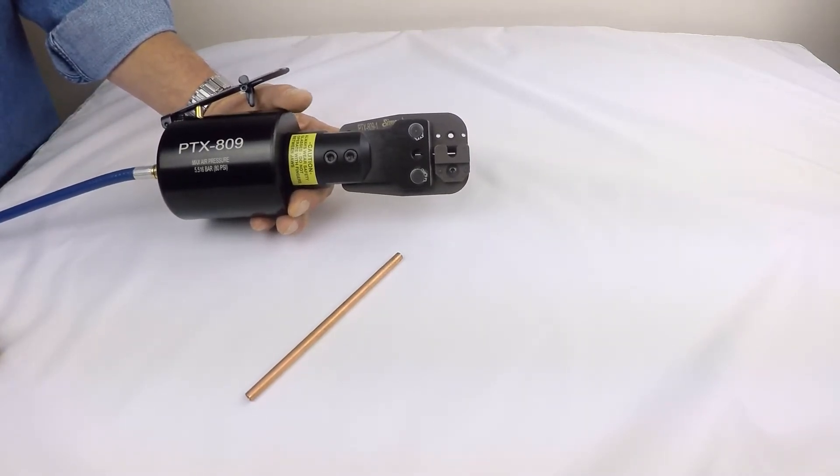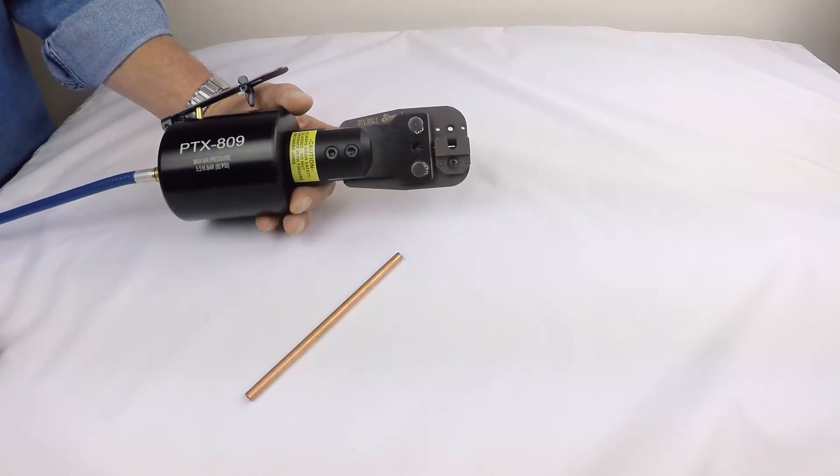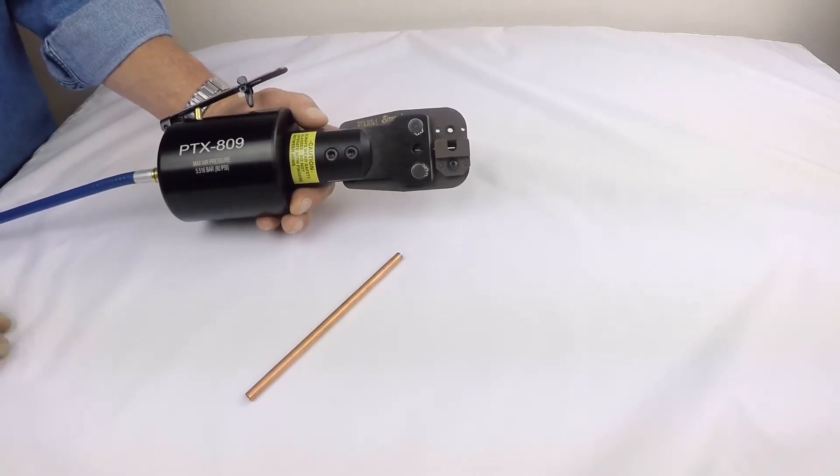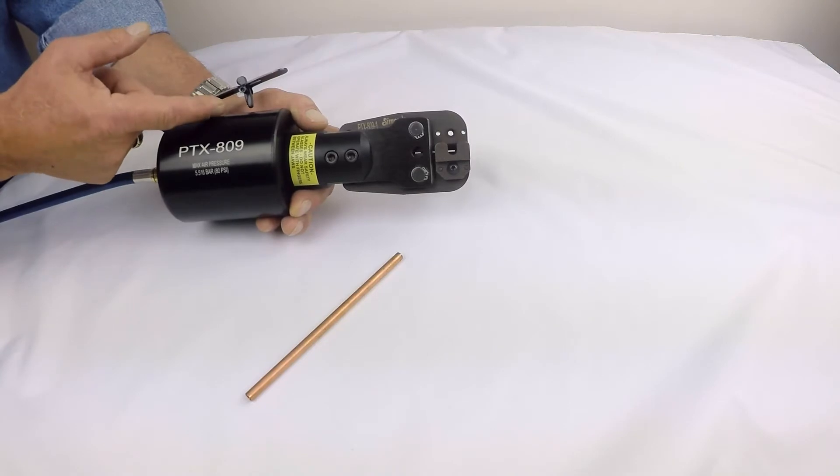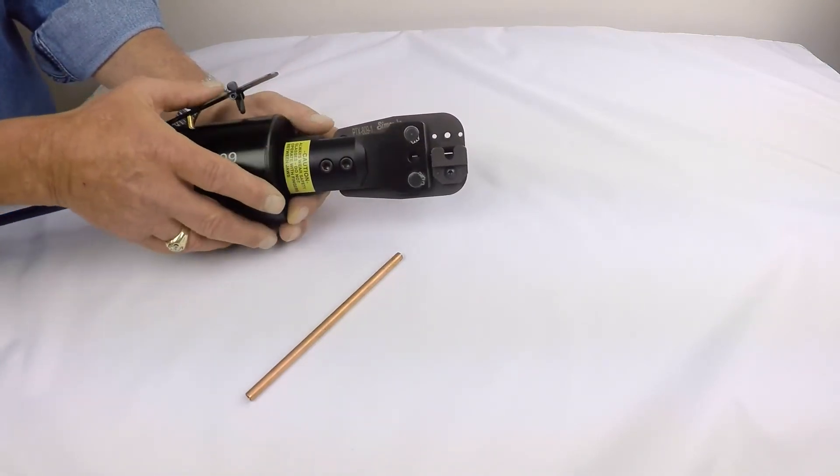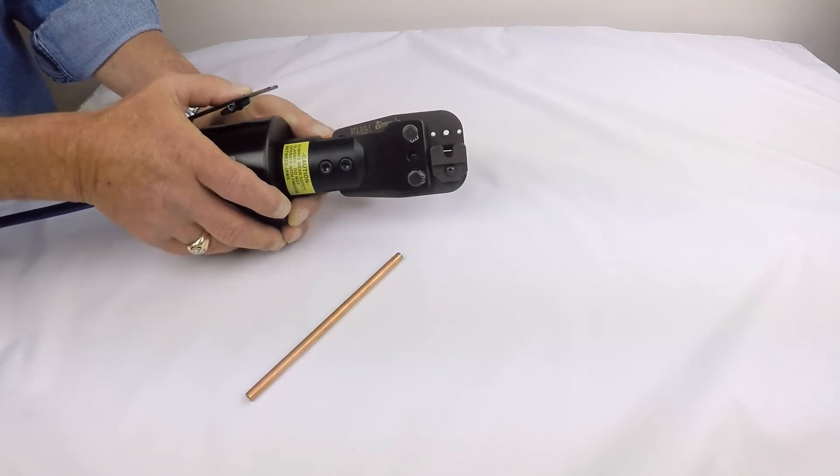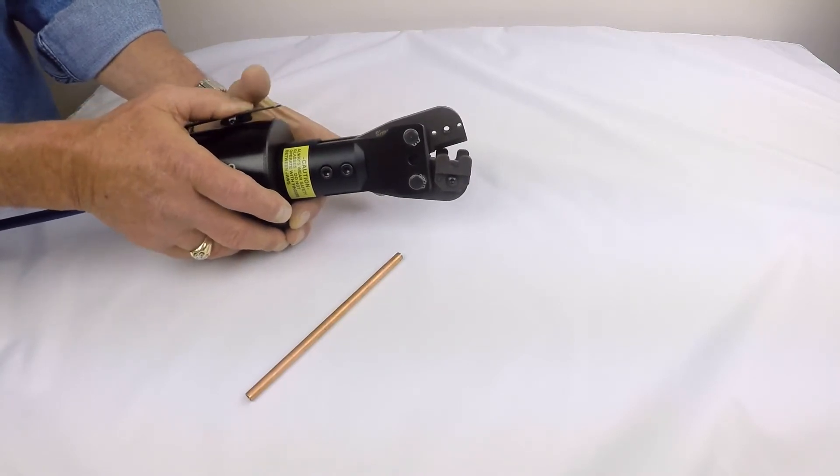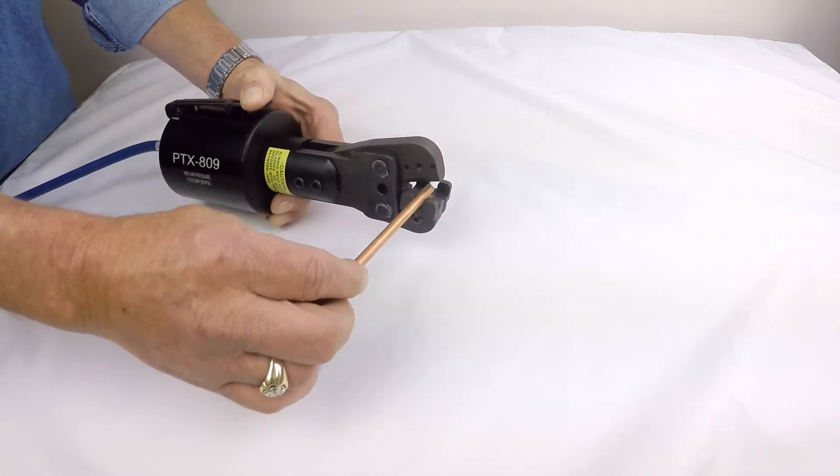The tool is configured as a reverse action power pack, meaning that when the control lever is in the released position, the jaw is in the closed position. When the lever is depressed, the jaw is open, so the tube can be inserted.